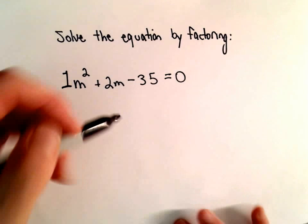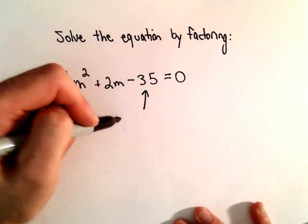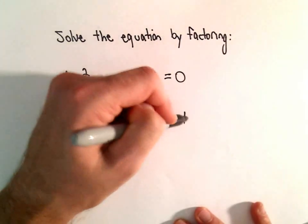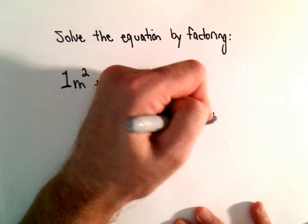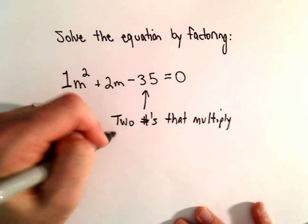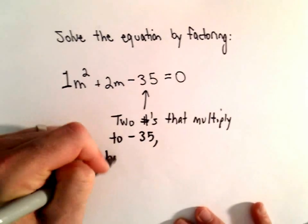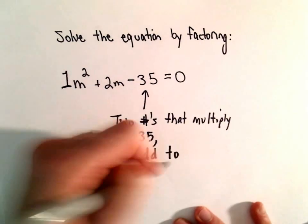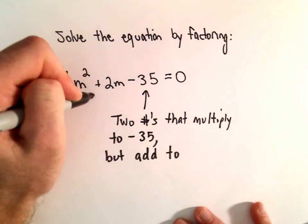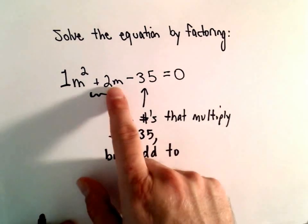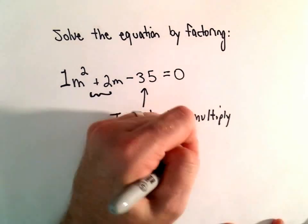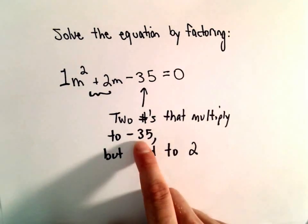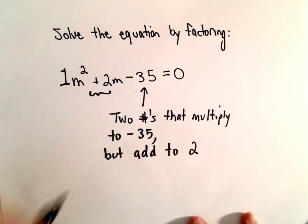In that case what we need is two numbers that multiply to negative 35 but add to the coefficient in front of the linear term, the term to the first power, which in this case is positive 2. So we need two numbers that multiply to negative 35 but add up to positive 2.